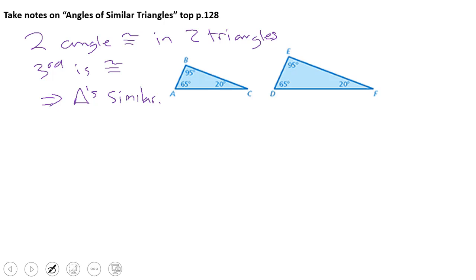So in other words, it's saying, I have this angle 20 which is congruent to that angle 20. I have this angle 95 which is congruent to that angle 95. Therefore, the third angle must be congruent. So the triangles are similar. Triangle ABC is similar to triangle DEF.